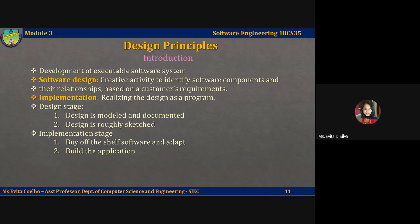Software design and implementation activities can be interleaved. Software design is a creative activity in which you identify software components, their relationships, based on customer requirements. Implementation, on the other hand, is the process of realizing the design as a program or writing code to implement the design. Sometimes there is a separate design stage and this design is modeled and documented. At other times, design is in the programmer's head or roughly sketched on a whiteboard or a sheet of paper.